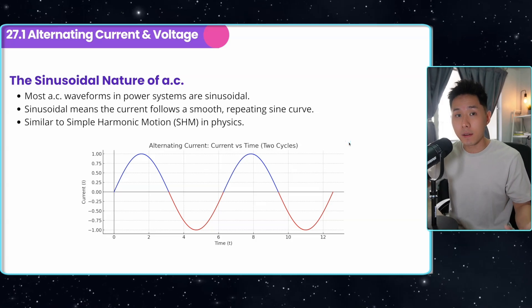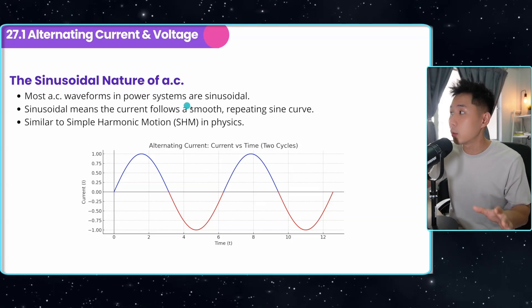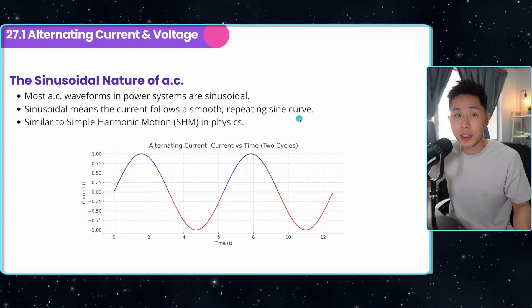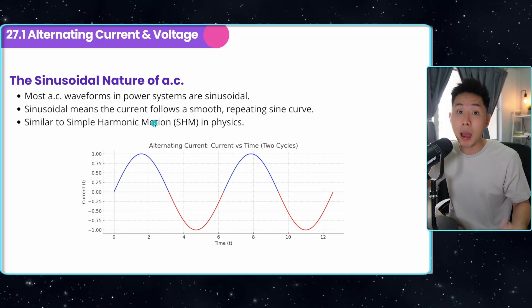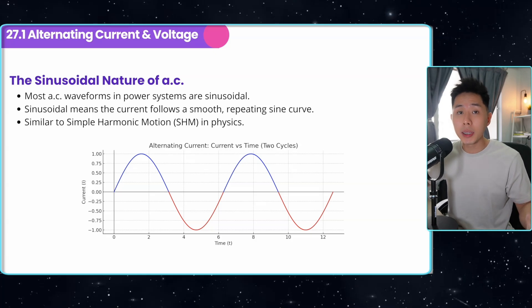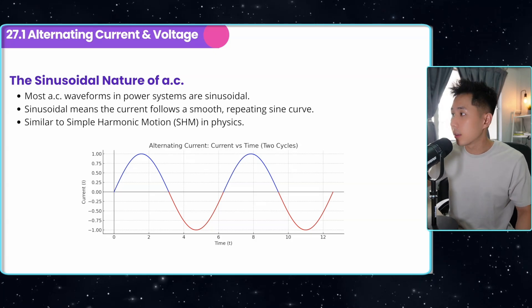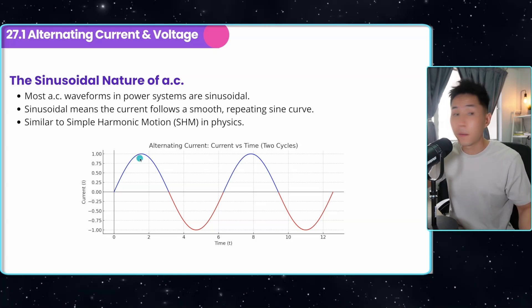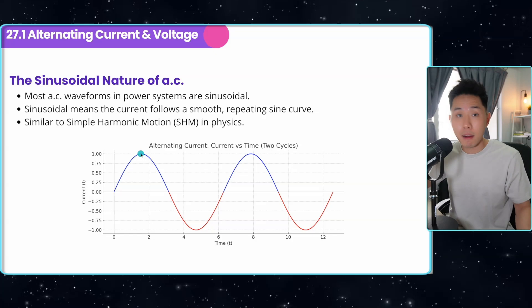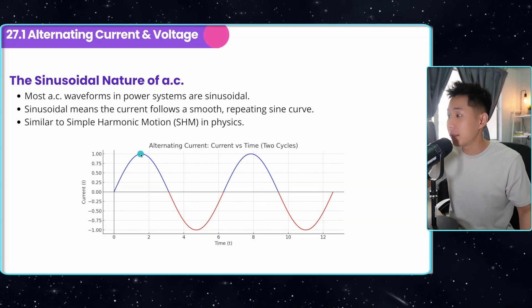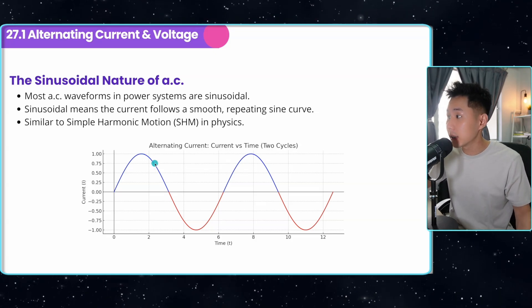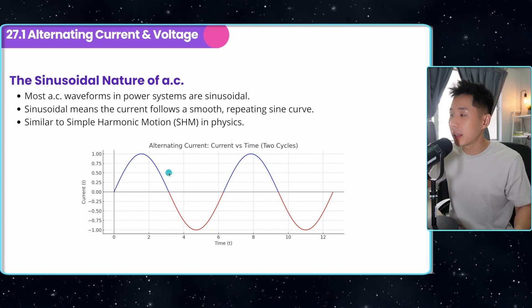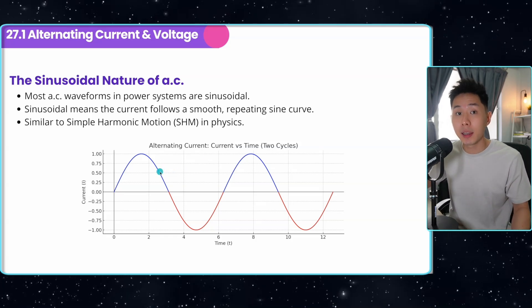And as for the alternating current, their shape is a sinusoidal graph, means a sine graph. This means that the current follows a smooth repeating sine graph. It is similar to simple harmonic motion. And because they are following the sinusoidal pattern, you can see that the amount of current varies at different time intervals. For example, at this point, the current is one ampere. And just a few milliseconds later, they might be at a lower value. So how do we figure out what is the value of the current at a particular time?